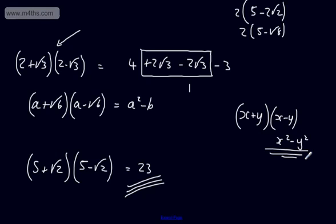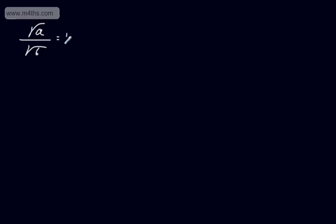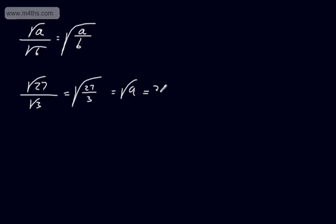We're now going to move on to dividing surds. Dividing surds falls into two different areas, with the more complicated area being rationalising the denominator. In this video, we're going to look at using simplification to divide. Let's recap the rule: the root of a over the root of b equals the root of a over b, where b is not zero. A nice example: root 27 over root 3 can be written as root of 27 over 3, which is root 9, and the root of 9 is 3. Alternatively, root 27 is 3 root 3, divided by root 3 — cancel off to give 3.